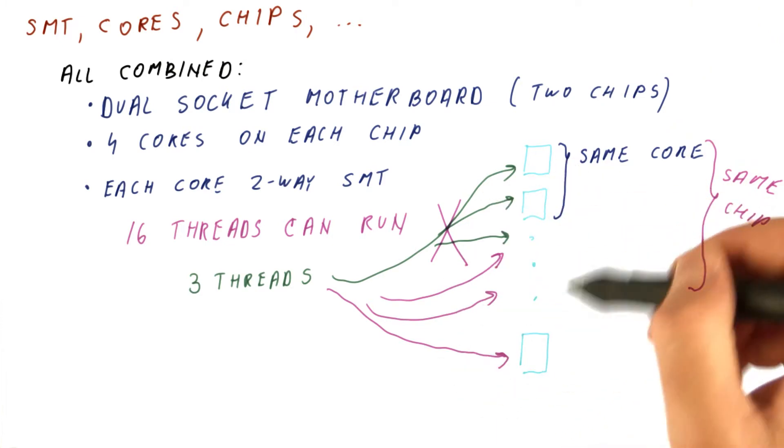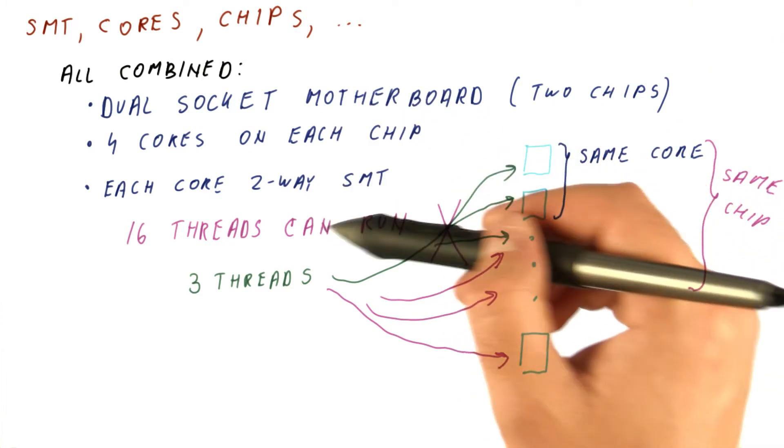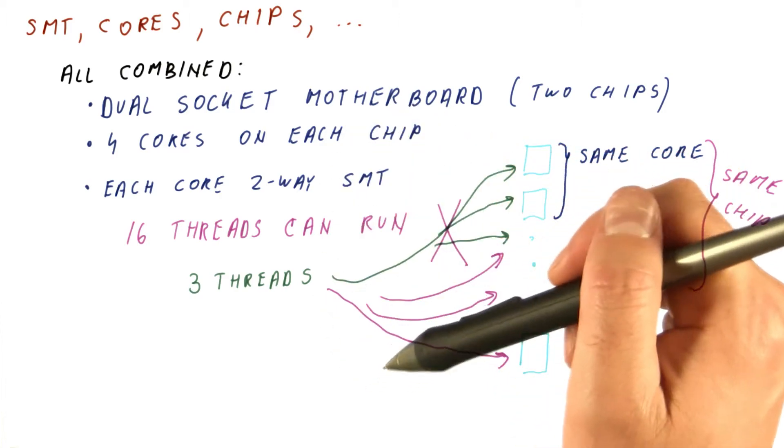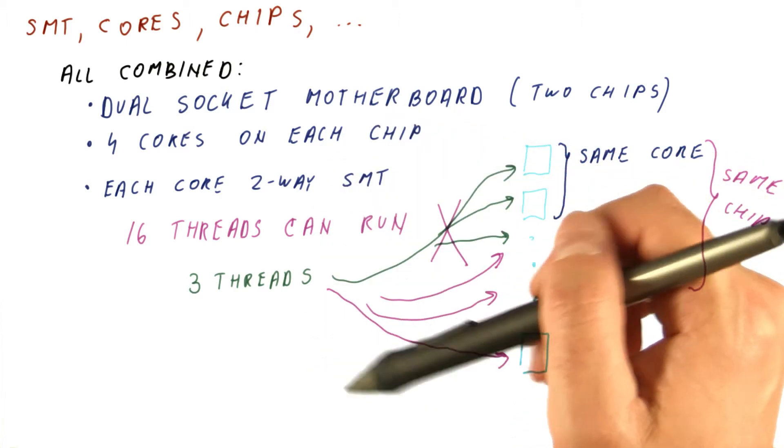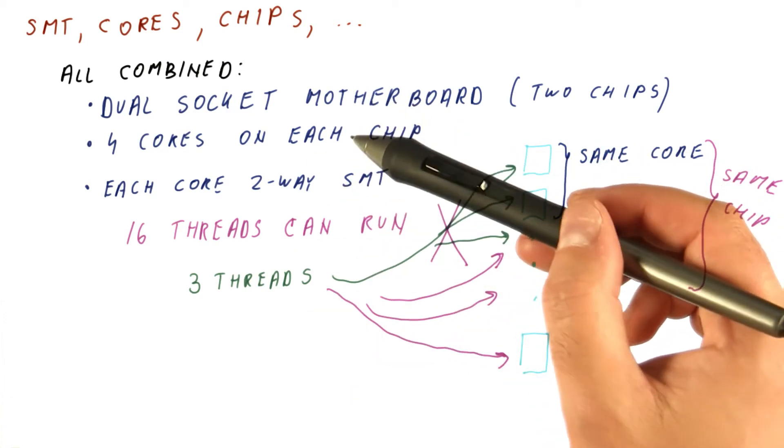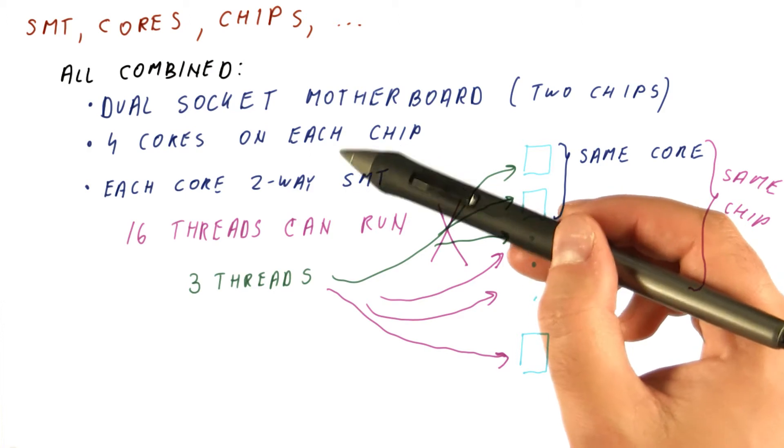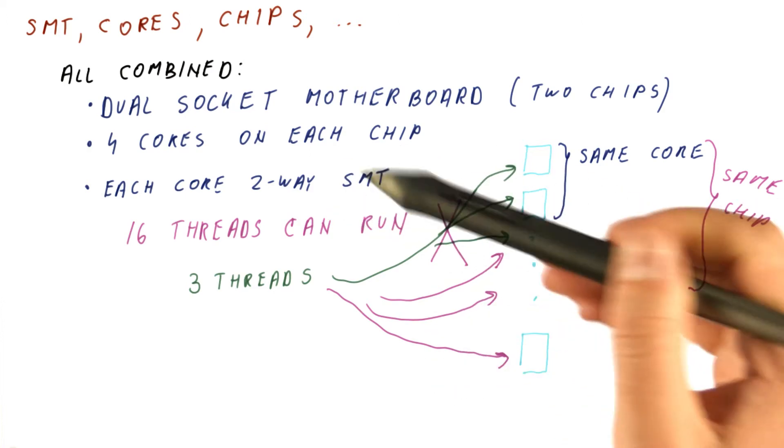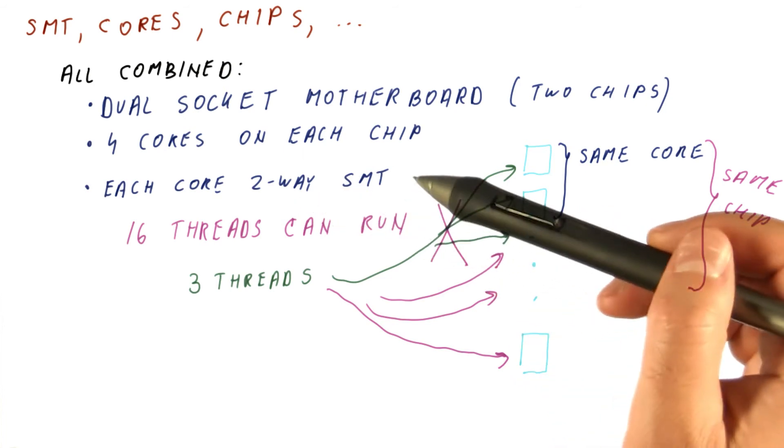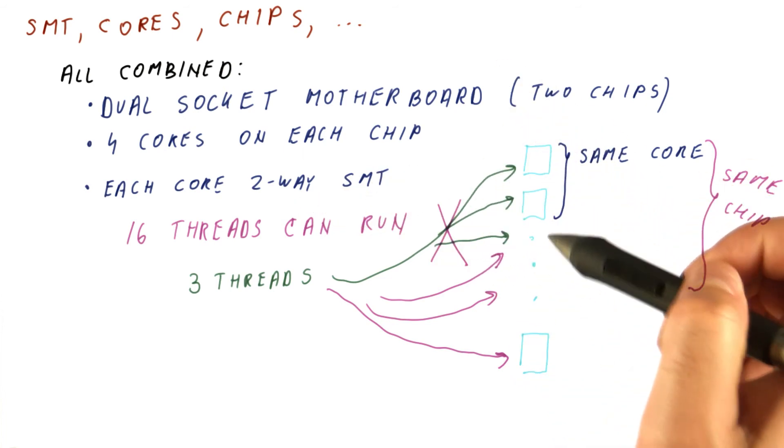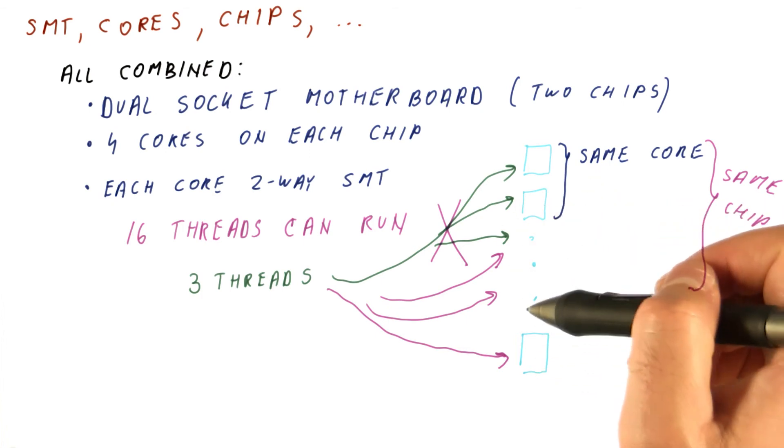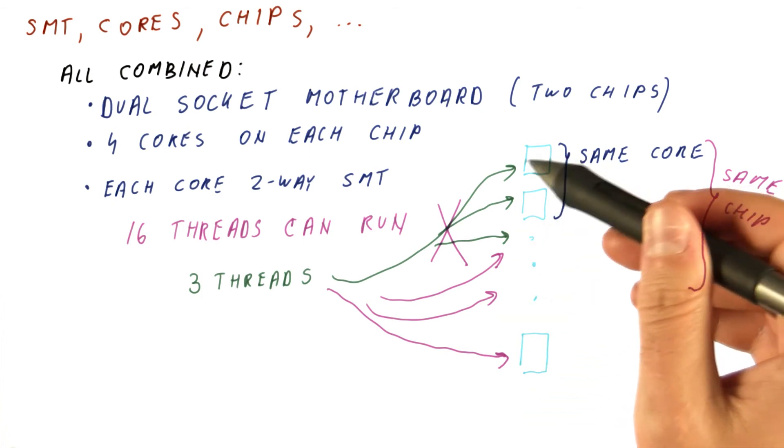And that requires the operating system to actually know what's going on. So most of the well-known operating systems like Windows and Linux and so on will actually be able to figure this out. But that means that as we have this fancy hardware that has parallelism at different levels of granularity, we also have to make our operating systems aware of that. So it's not just expose more thread contexts that the operating system can use. It actually matters how you use these thread contexts.